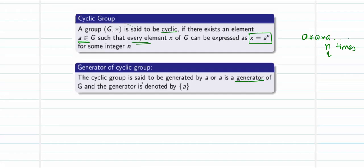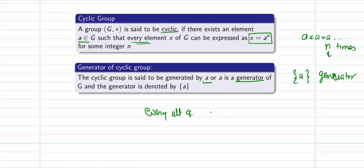A cyclic group is said to be generated by a, or a is the generator of G, and we denote it within curly braces. Every element of G will be of the format a^n, where a^n means the binary operation is performed n times — for some integer n.